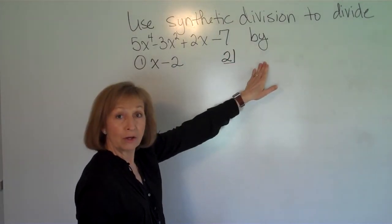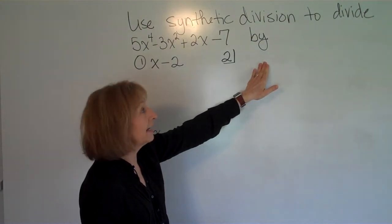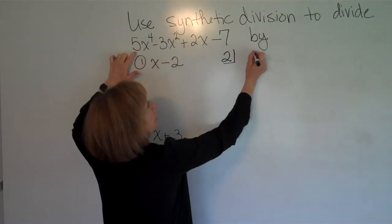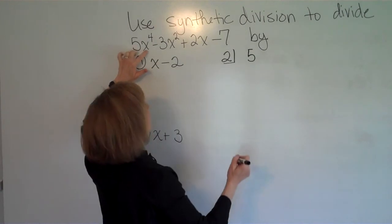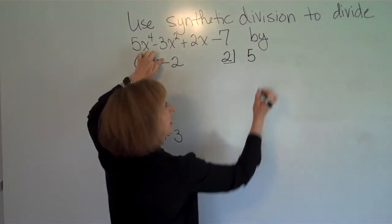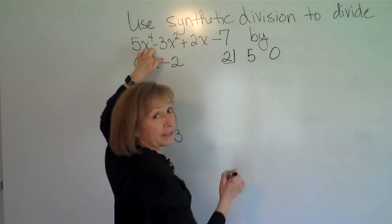Now the coefficients only of the polynomial we're dividing into. So I have a coefficient of 5 in front of my x^4. I don't have an x^3, so that's a coefficient of 0.